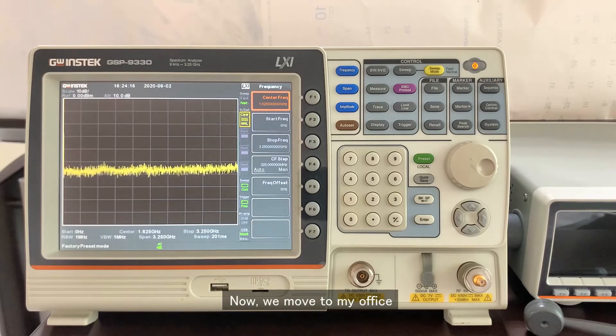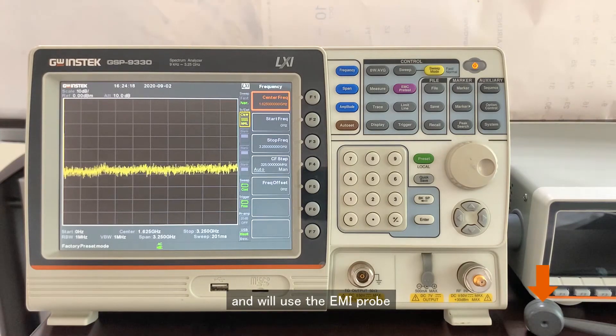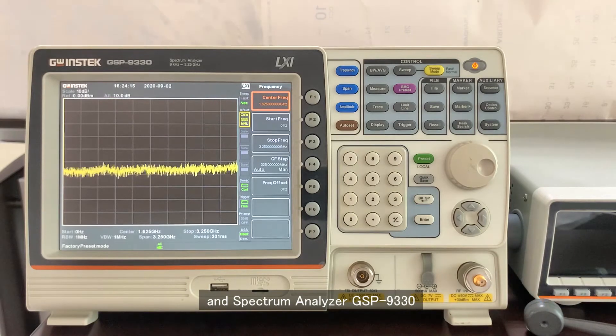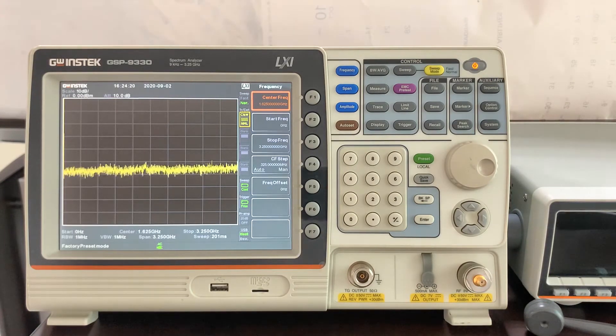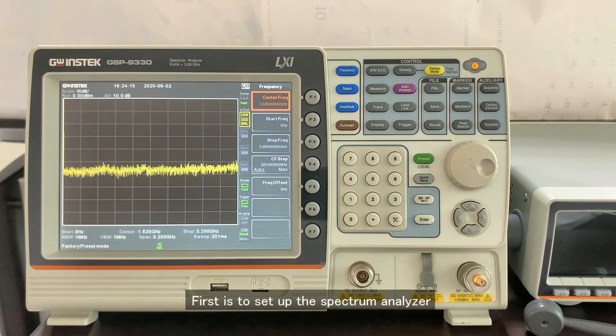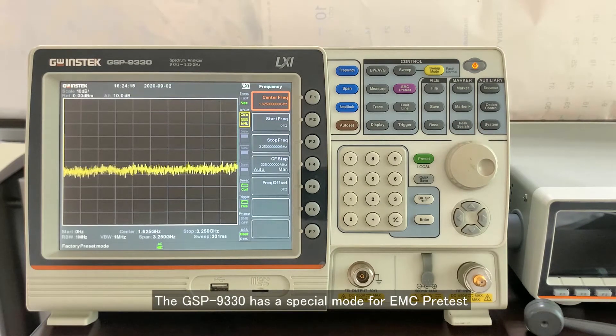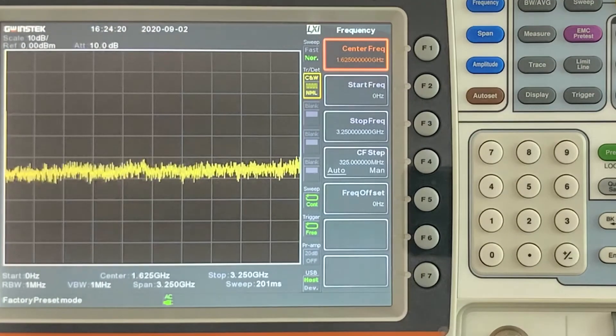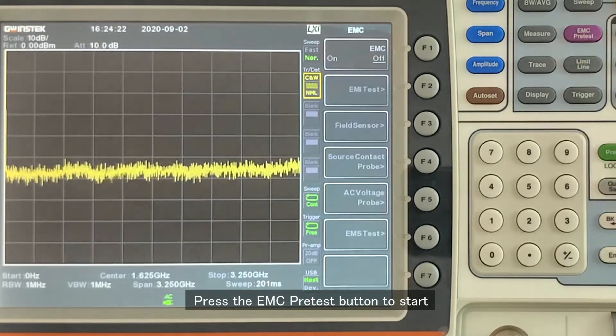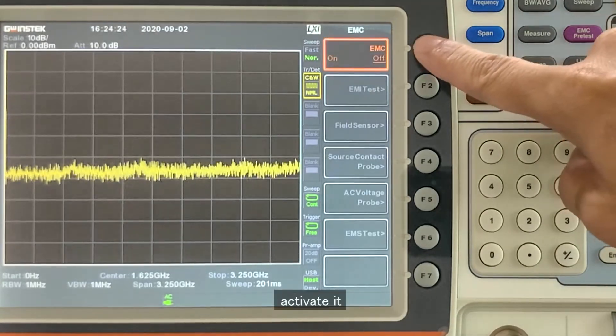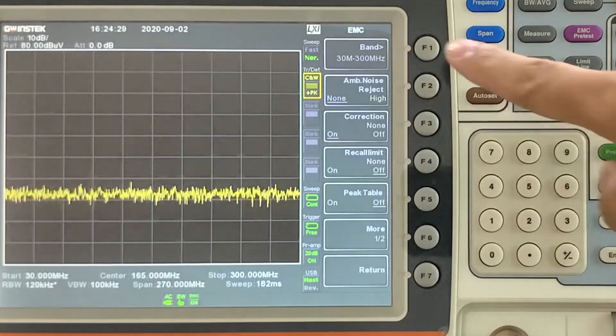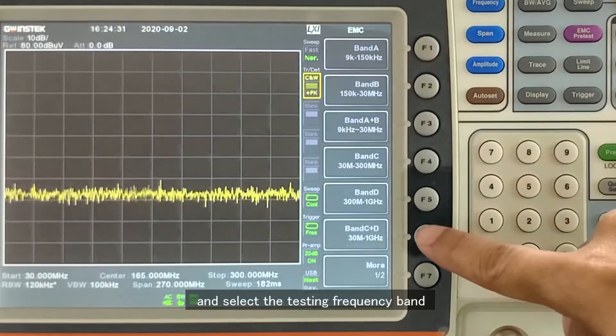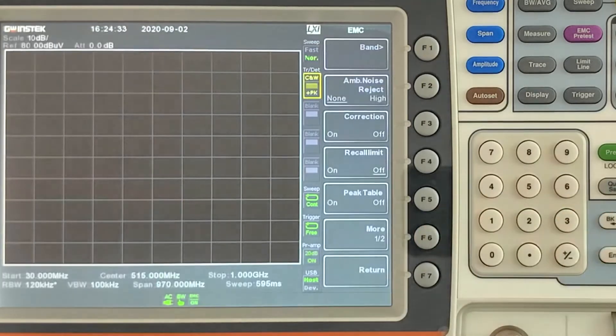Now we move to my office. And we will use the EMI probe and the Spectrum Analyzer GSP-9330 to find out the EMI source. The first is to set up the Spectrum Analyzer. GSP-9330 has a special mode for EMC pre-test. Press the EMC pre-test button to start, activate it, and select the testing frequency band. And now it's ready.